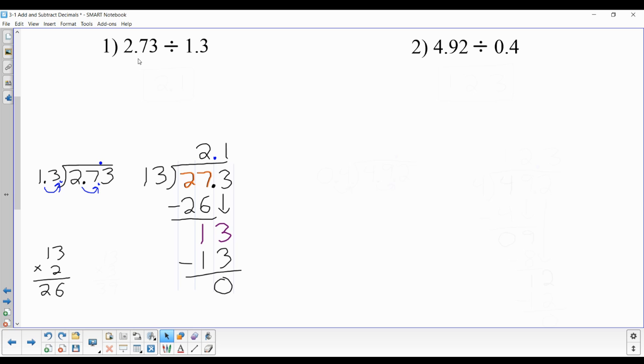So the answer is 2.73 divided by 1.3 is 2.1. You put your final answer under the division sign right under what you're dividing. And then you box it in. So let's do one more example.